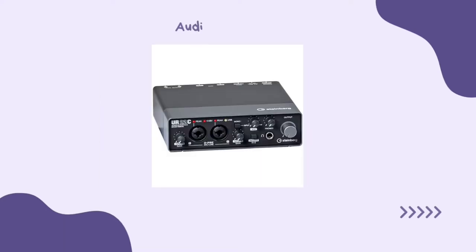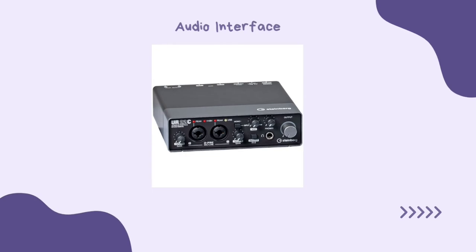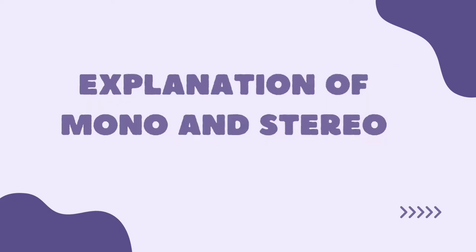The next one is audio interfaces. This converts microphone and instrument signals into a format that computers and software recognize. It also routes audio from your computer out to your headphones and studio monitors. Now, let's proceed to the explanation of mono and stereo. Mono audio has just one channel, whereas stereo contains two channels. Mono signals are recorded and played back using a single audio channel, while stereo sounds are recorded and played back using two audio channels. As a listener, the most noticeable difference is that stereo sounds are capable of producing the perception of width, whereas mono sounds are not.